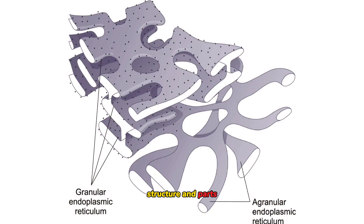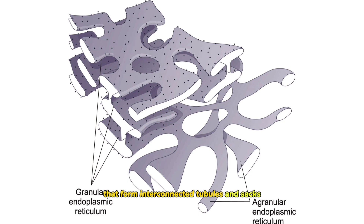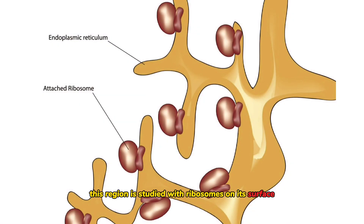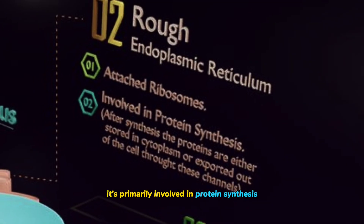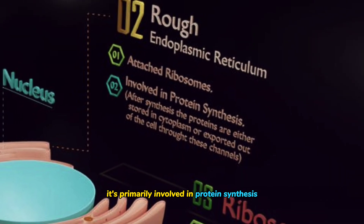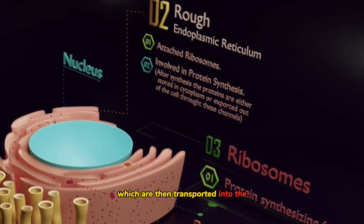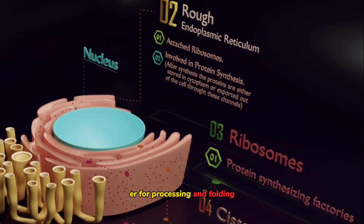The endoplasmic reticulum consists of a complex network of membranes that form interconnected tubules and sacs. The rough endoplasmic reticulum is studded with ribosomes on its surface, giving it a rough appearance. It's primarily involved in protein synthesis — ribosomes assemble proteins, which are then transported into the ER for processing and folding.